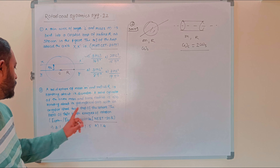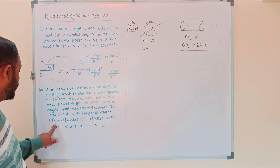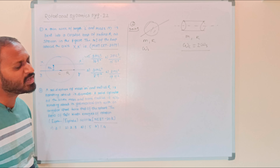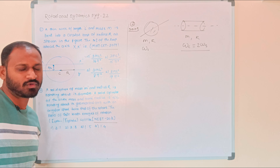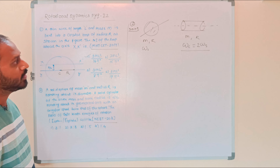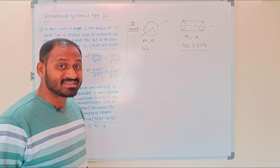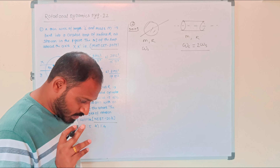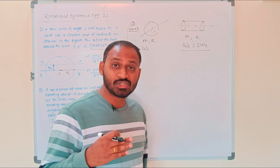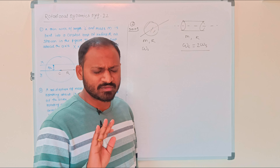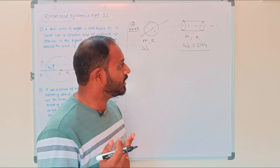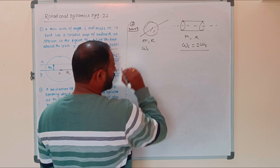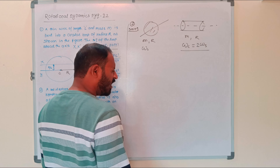We are asked to find the ratio of their rotational kinetic energies — kinetic energy of sphere divided by kinetic energy of cylinder. Since both the sphere and the solid cylinder are rotating about their respective axes, they have rotational kinetic energy, not linear kinetic energy.